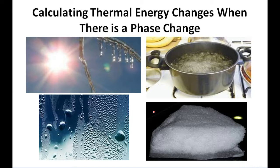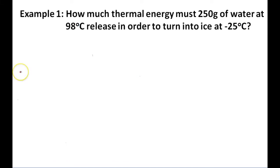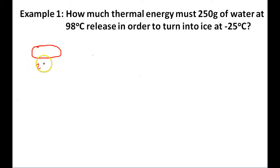In this example, it says how much thermal energy must 250 grams of water at 98 degrees Celsius release in order to turn into ice at negative 25 degrees Celsius. So when we have these types of problems where we are asked to calculate a substance's change in thermal energy when there is also a change in state of matter, what I like to do is draw a picture of what's happening here. So in this problem, you've got 250 grams of water at 98 degrees Celsius.